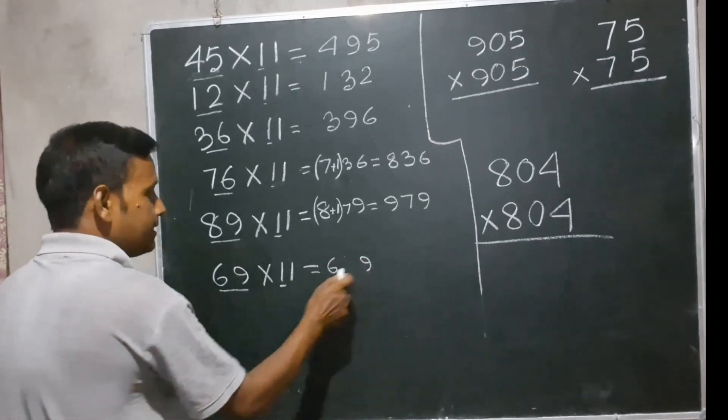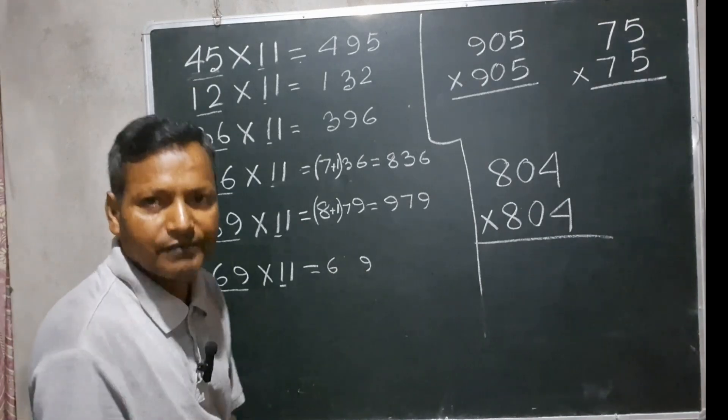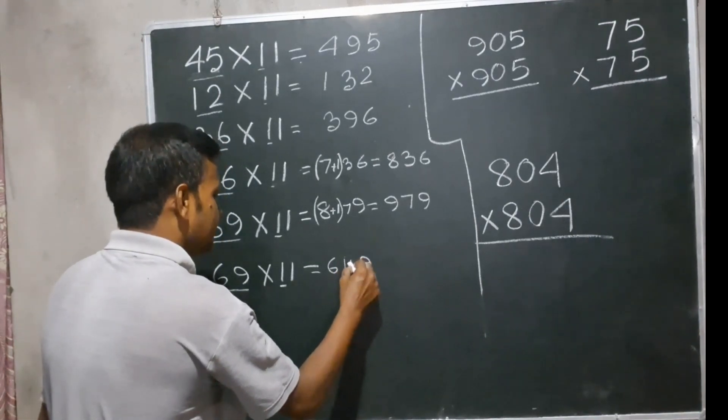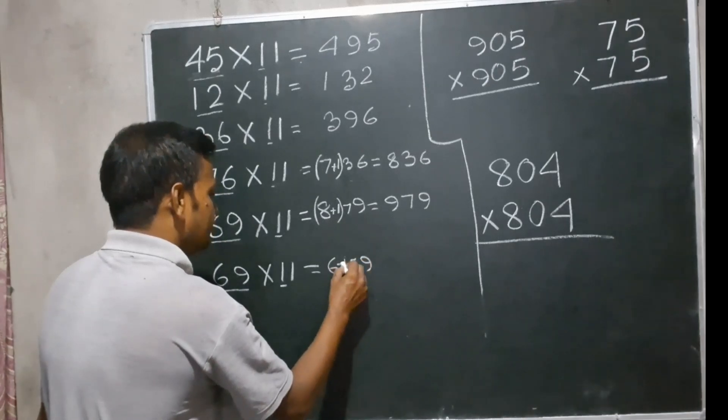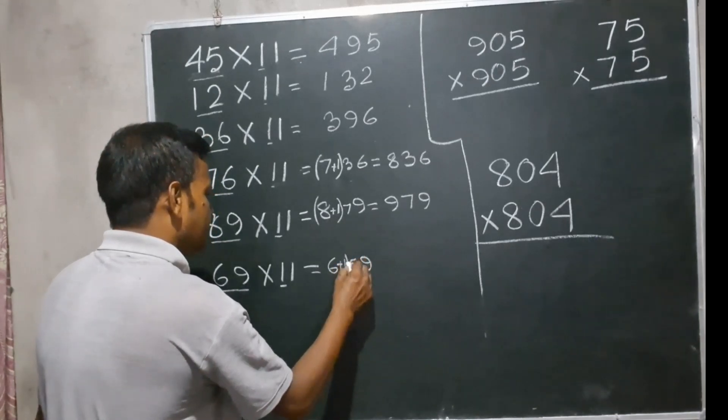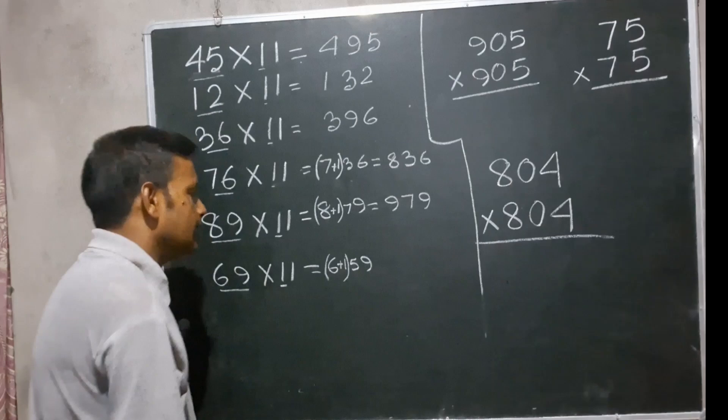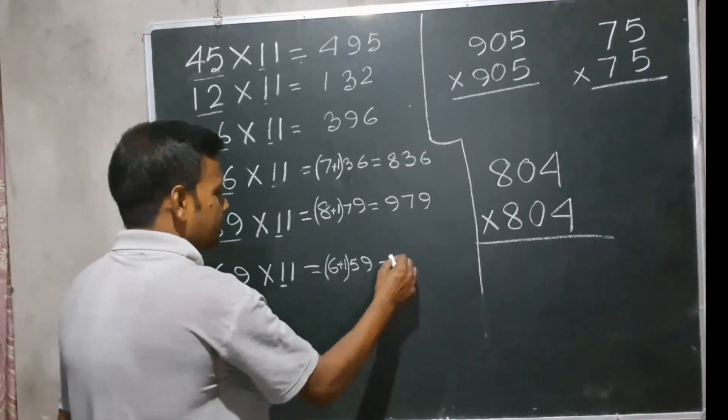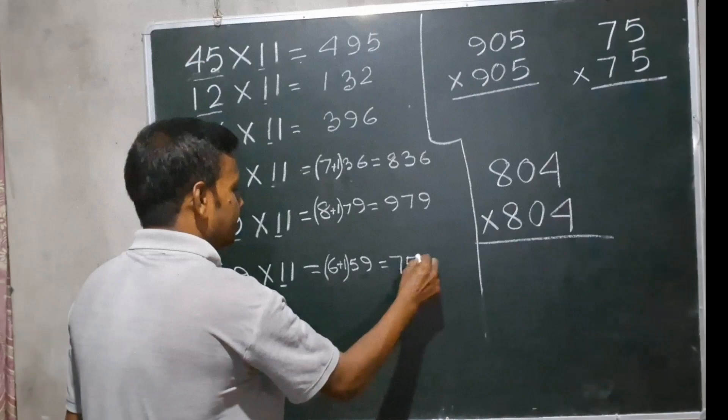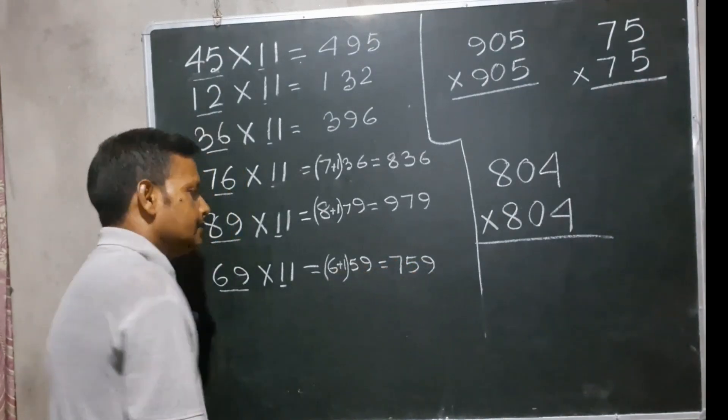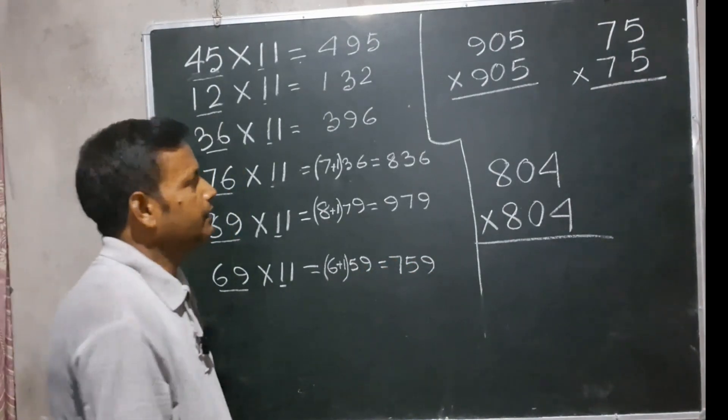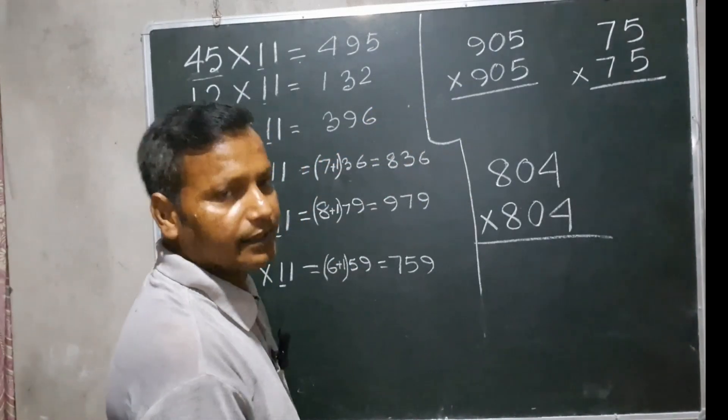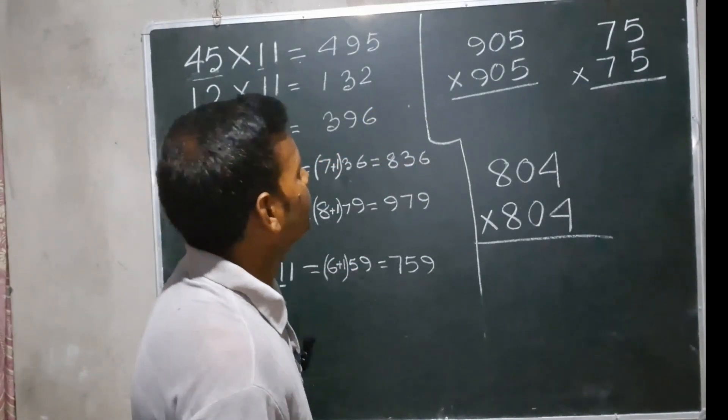9 and 6 equals 15. We have to add them again because we have two digits in the middle: 6, 6, and 1 equals 7, giving us 759.